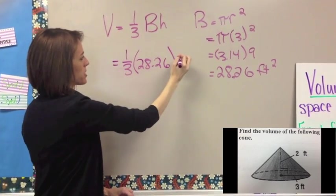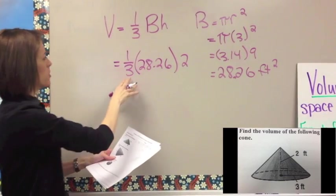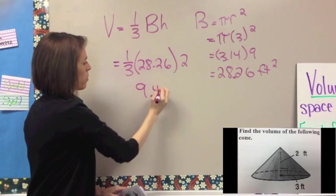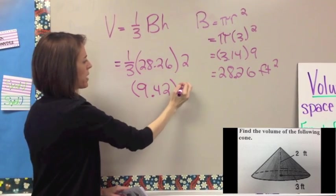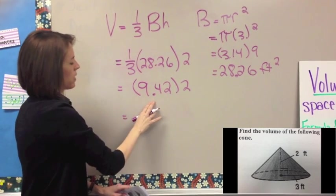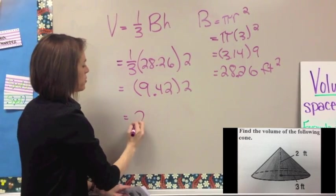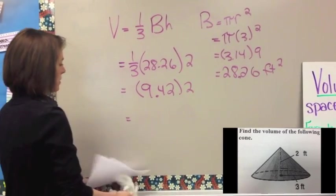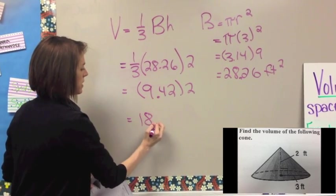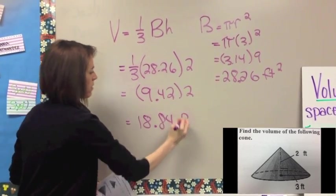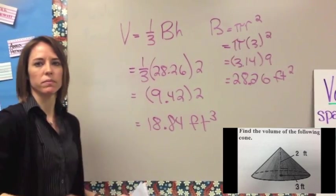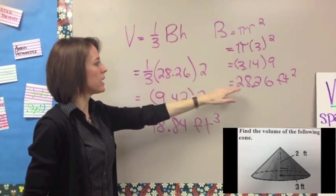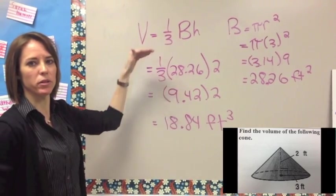Then multiply by 2, which is the height of the cone. So 1/3 times 28.26 is 9.42, and then we multiply that by 2, which gives us 18.84 feet cubed. The hardest part is making sure you identify your base correctly, use the right area formula, plug it in, and then work back through the original formula step by step.